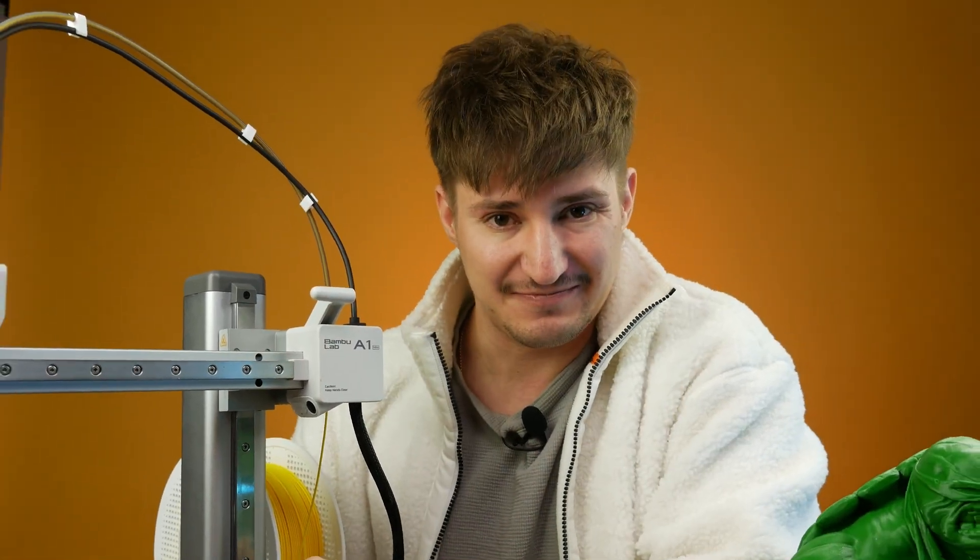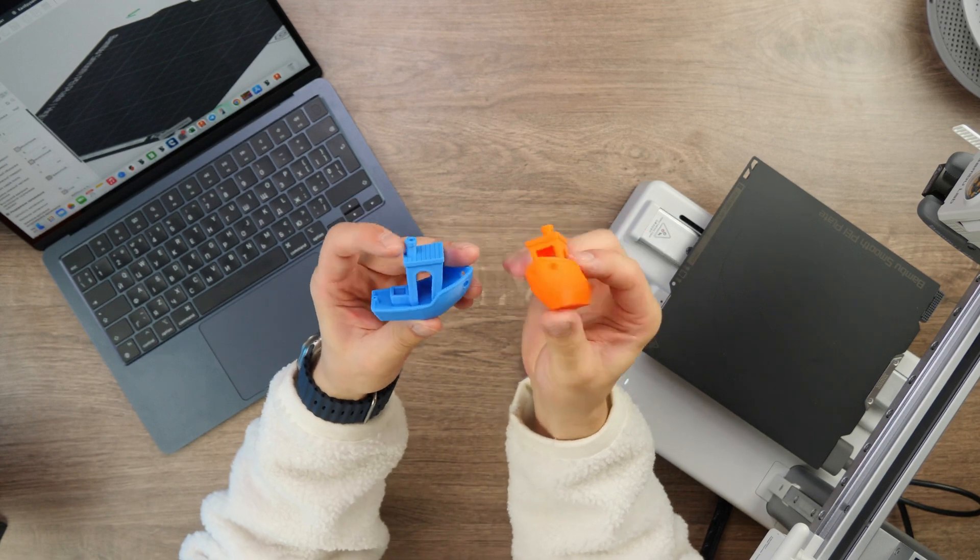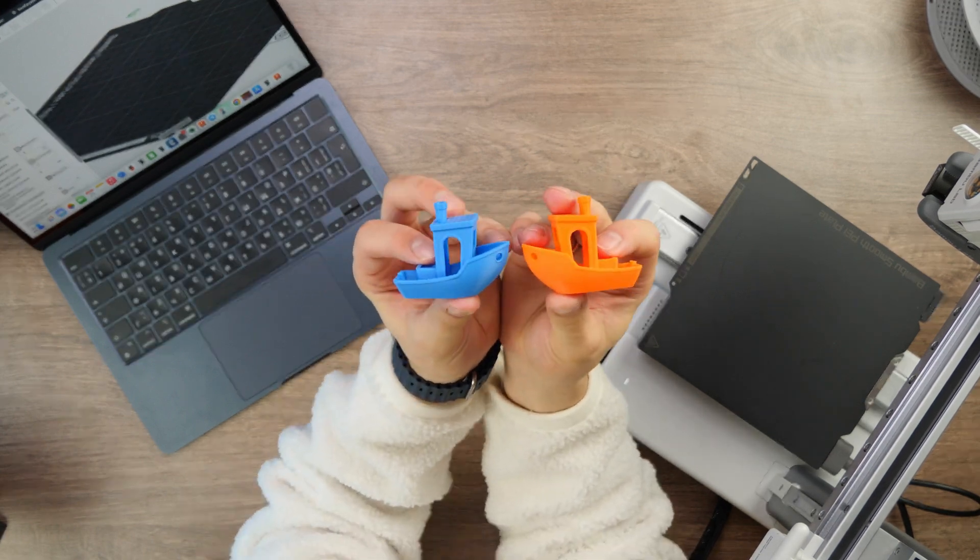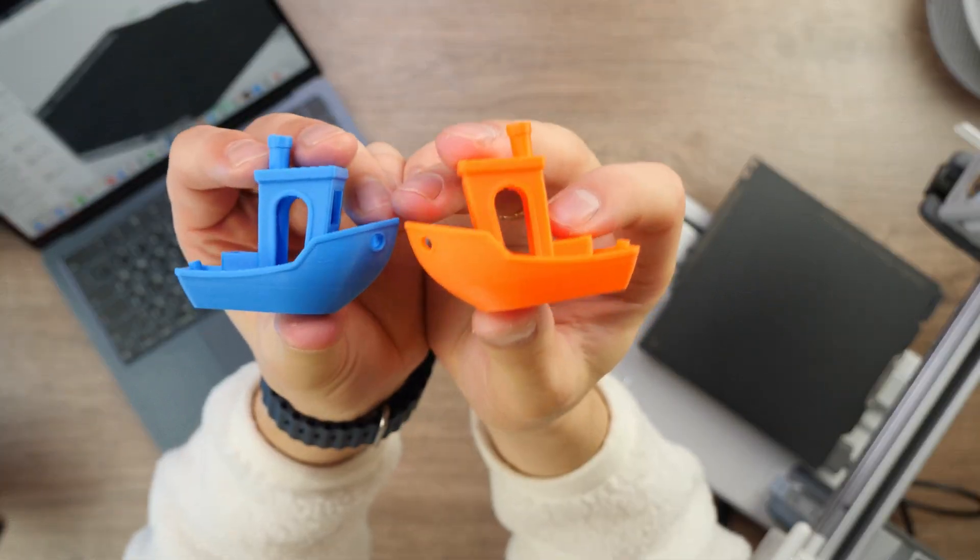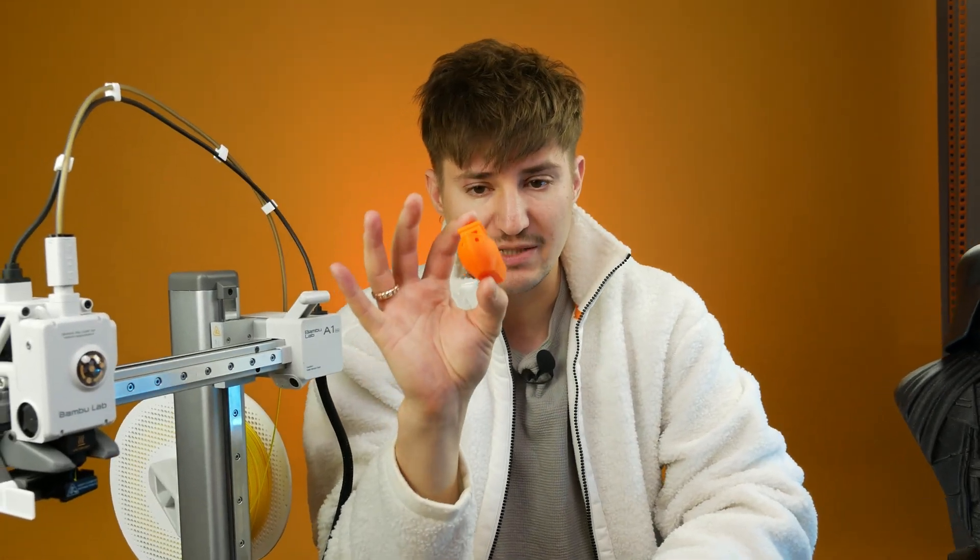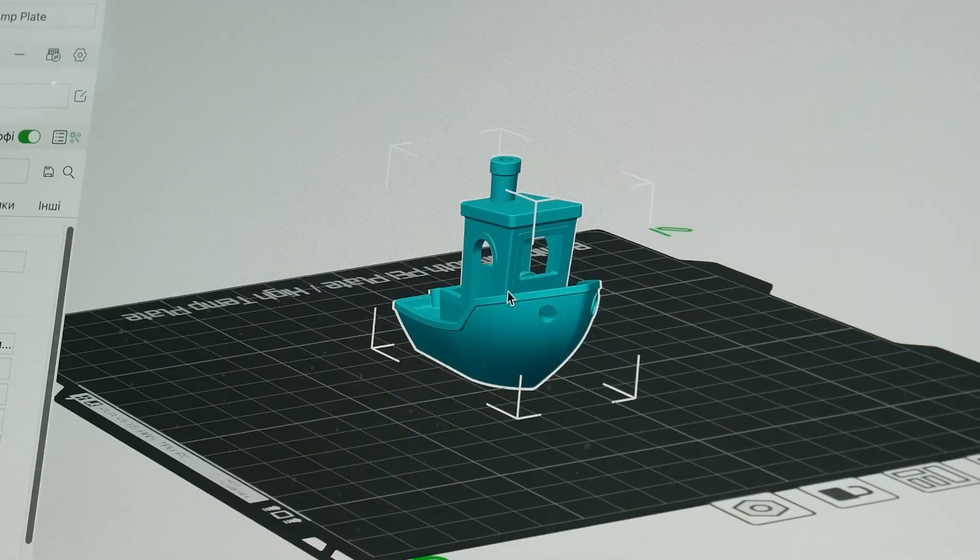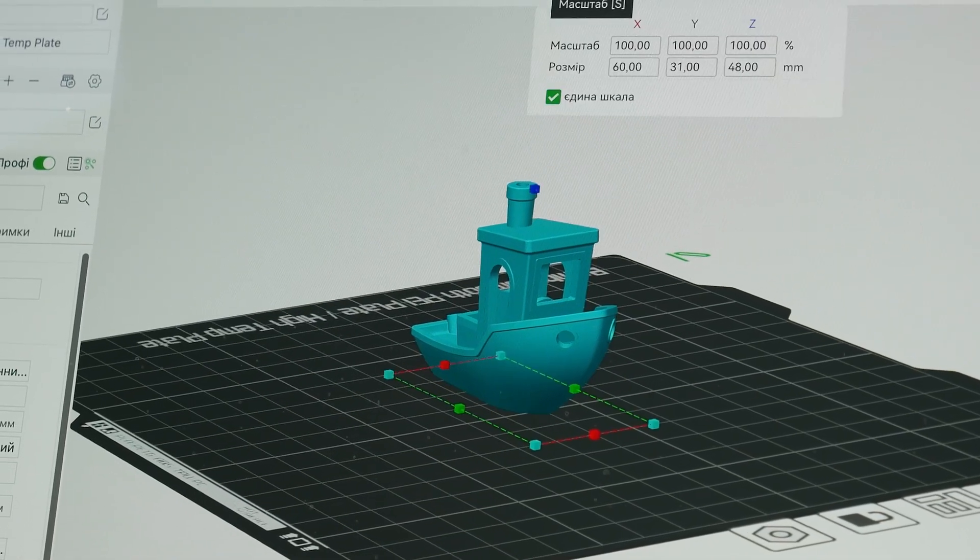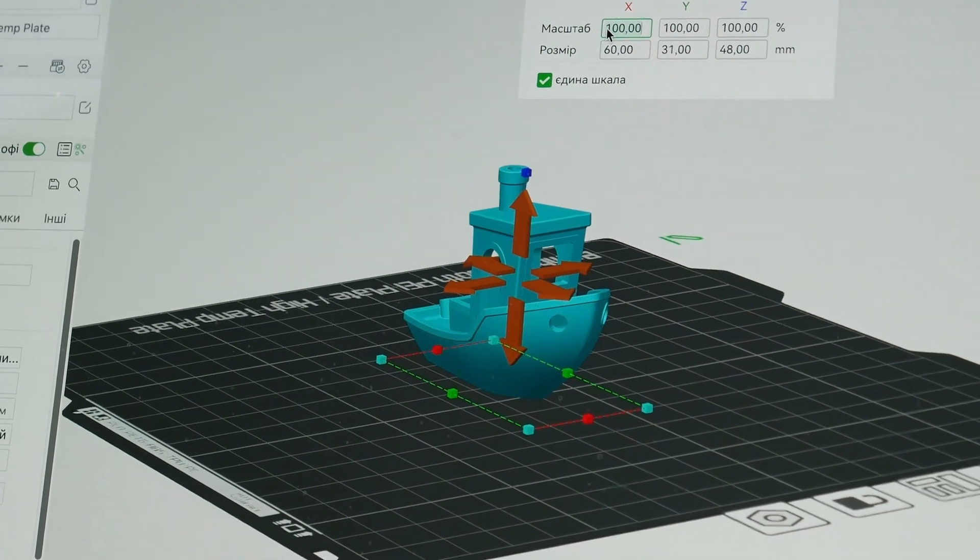You're in the Cubastic channel. Let's go. We have two Benchy ships. Standard size. And this is how they look. Both of them are printed on the Bamboo Lab A1 mini printer. And today we will reduce the size of this particular model. And this is how it looks in 100% size. And now we will reduce it.